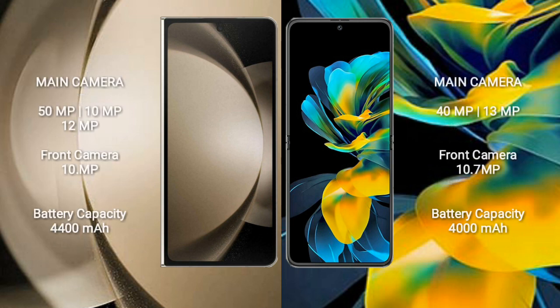Samsung Galaxy Z Fold 5 features a rear triple camera setup: 50MP + 10MP + 12MP, and a 10MP front camera. Huawei Pocket Ace features a rear dual camera setup: 40MP + 13MP, and a 10.7MP front camera.